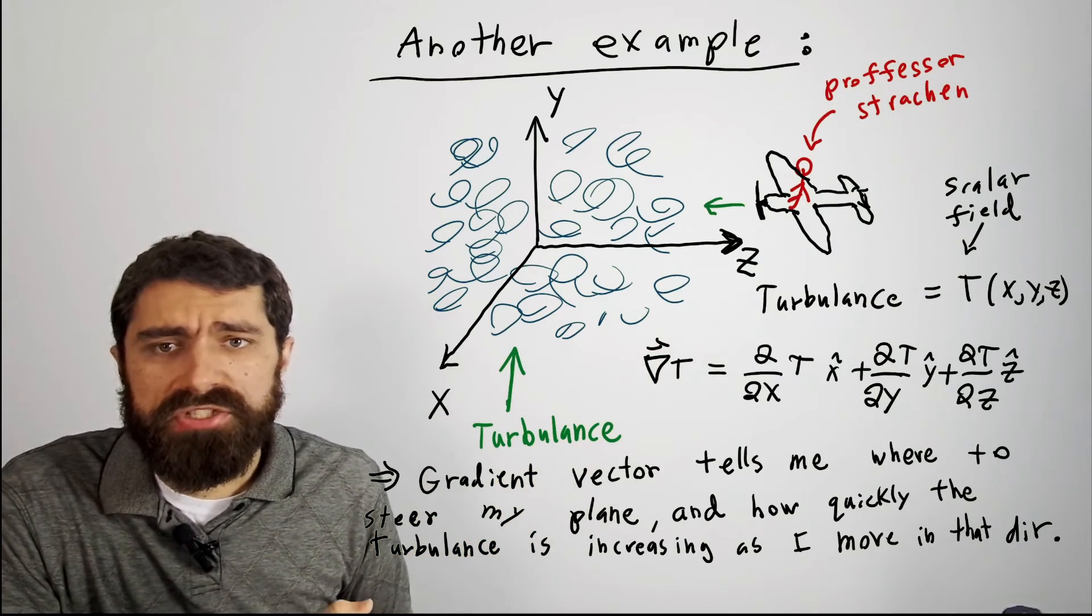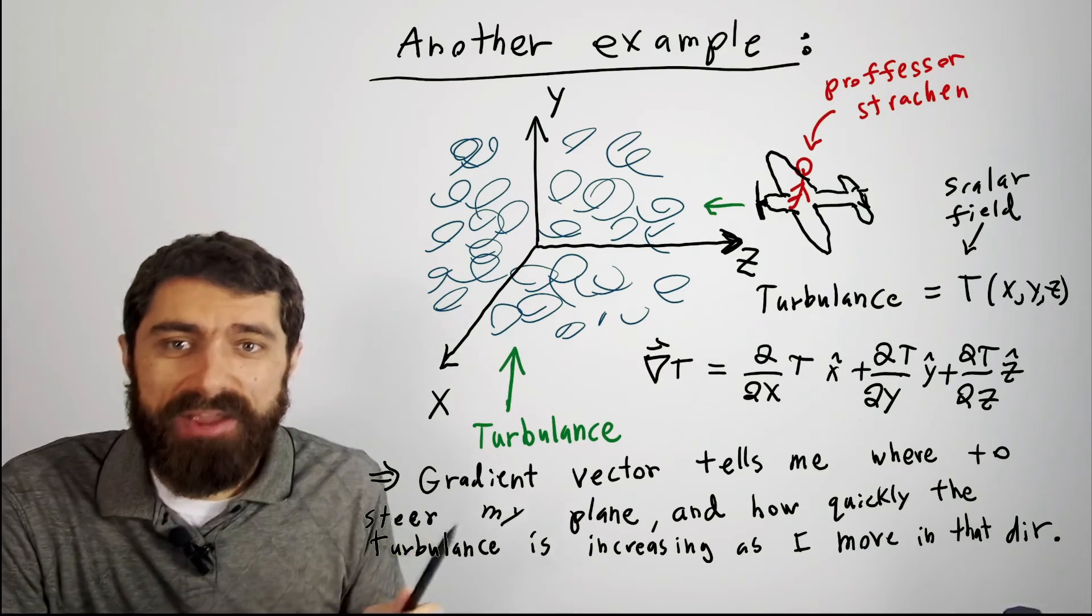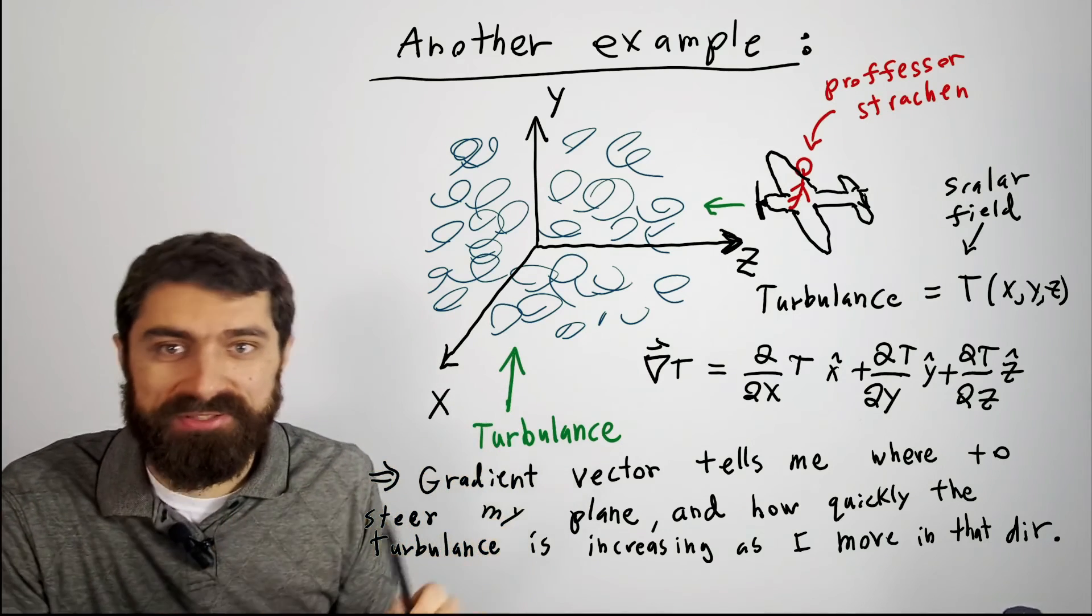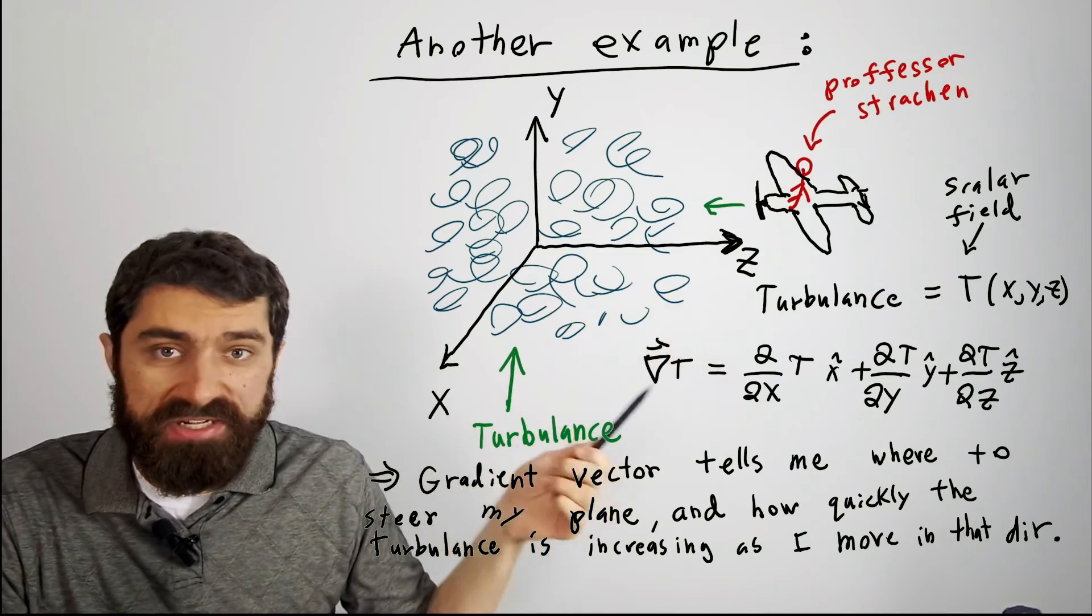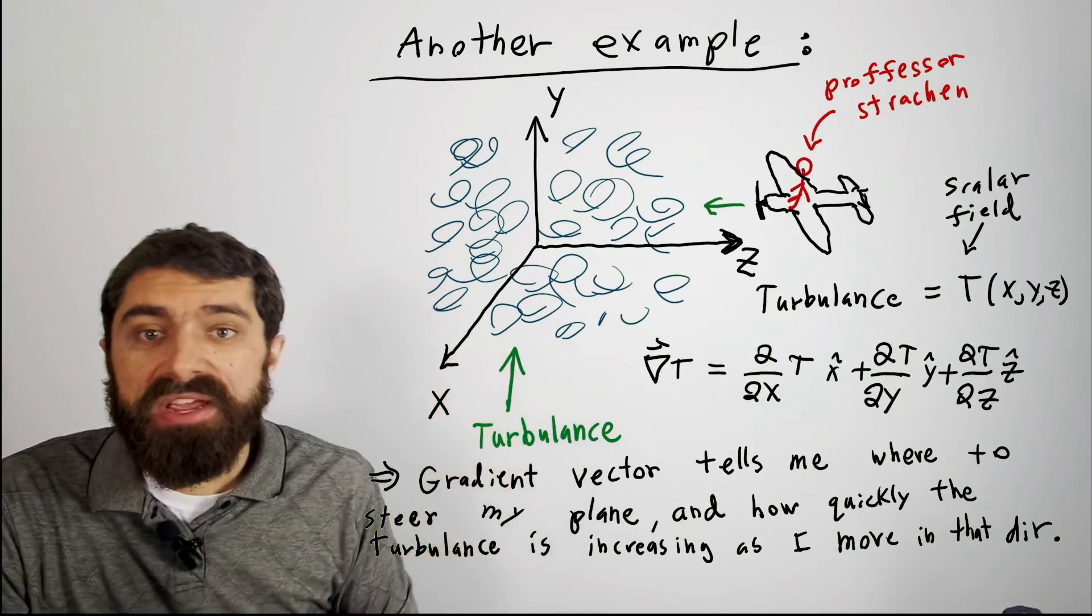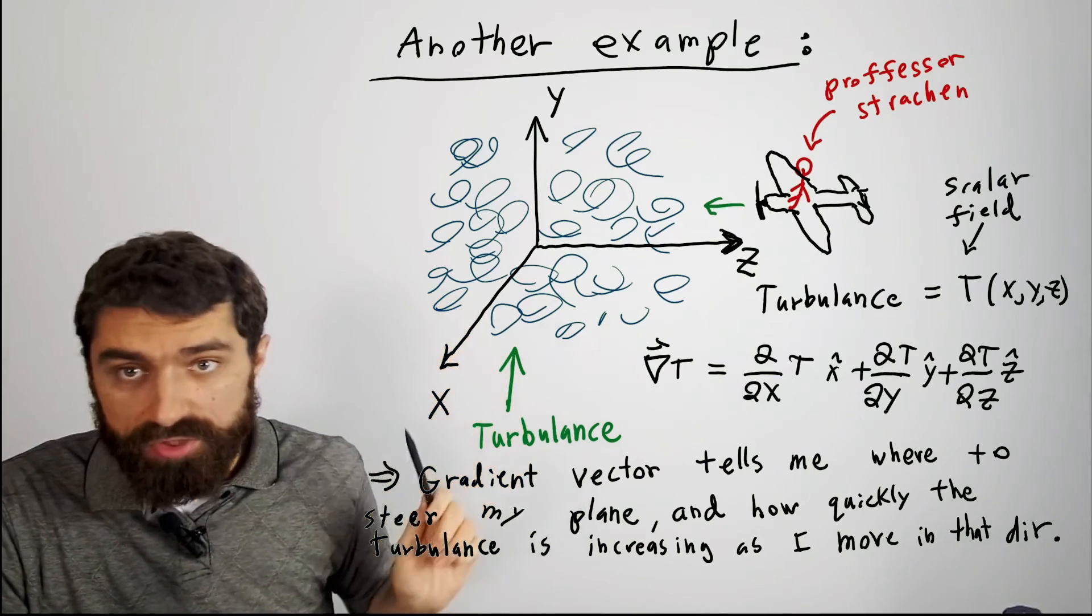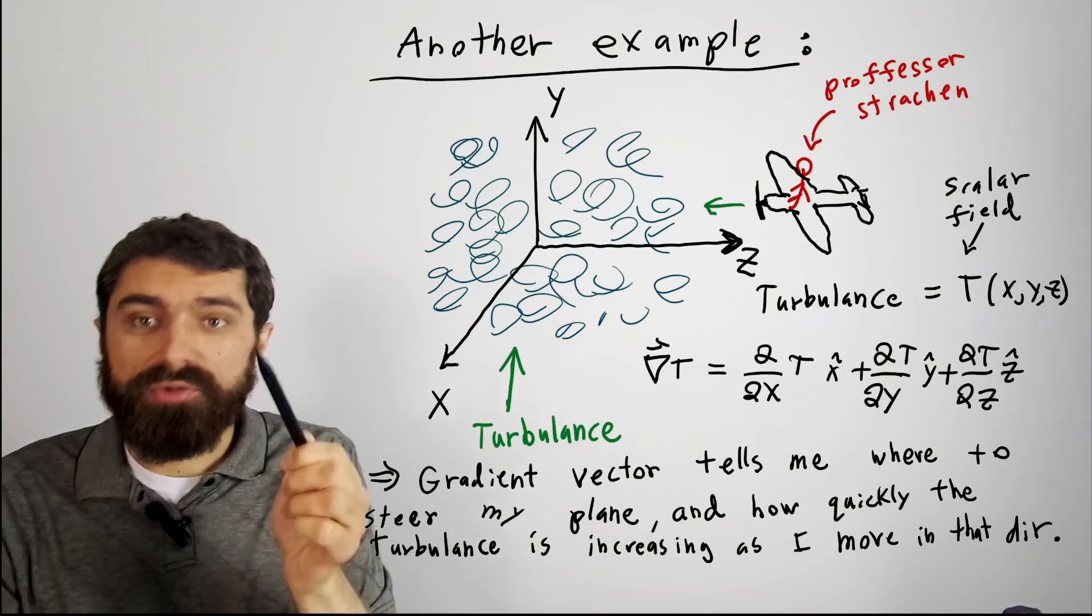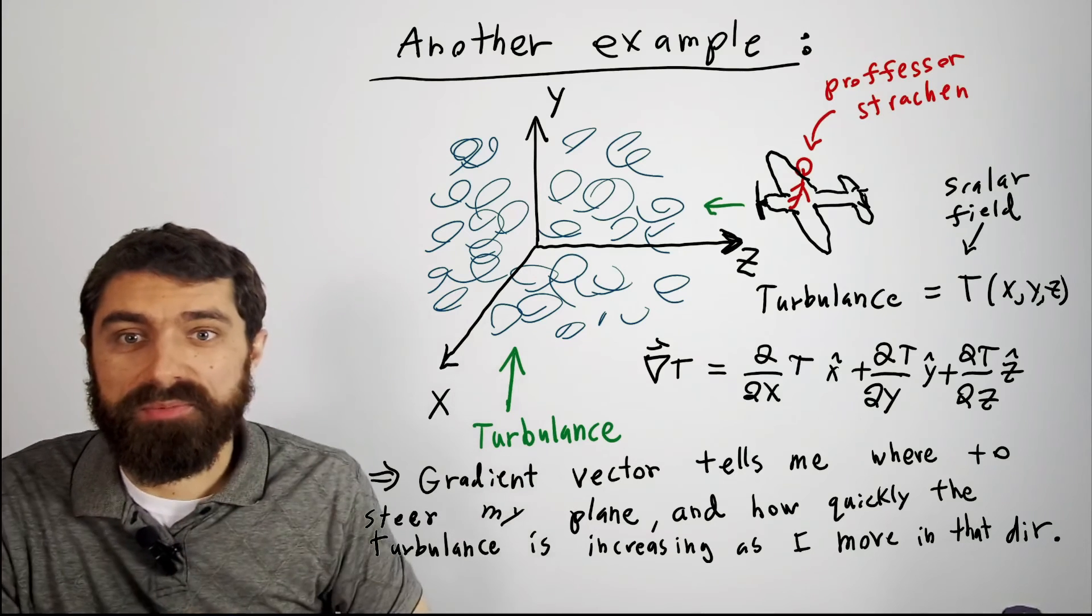So the question is, I need to figure out where do I need to go? Well, if I want to basically go to the places that have the most turbulence. Well, as I'm flying, I go ahead and just calculate the gradient vector here of this, and it would give me a certain vector. And the direction of that vector would tell me the direction that I need to steer my plane in order to increase, in order to get the maximum increase, go in the direction of maximum increase in turbulence.